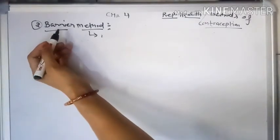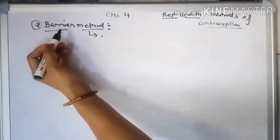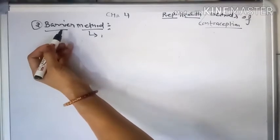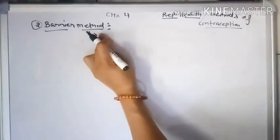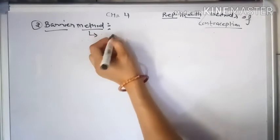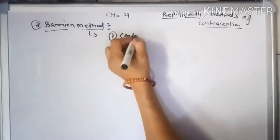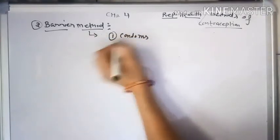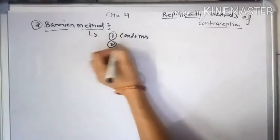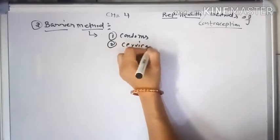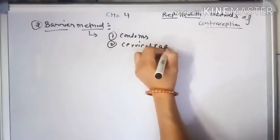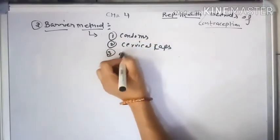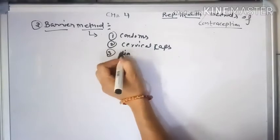Barrier method means the use of physical agents to prevent unwanted pregnancies. Physical agents used for contraception include: first, the condom; second, cervical caps; and third, diaphragms.